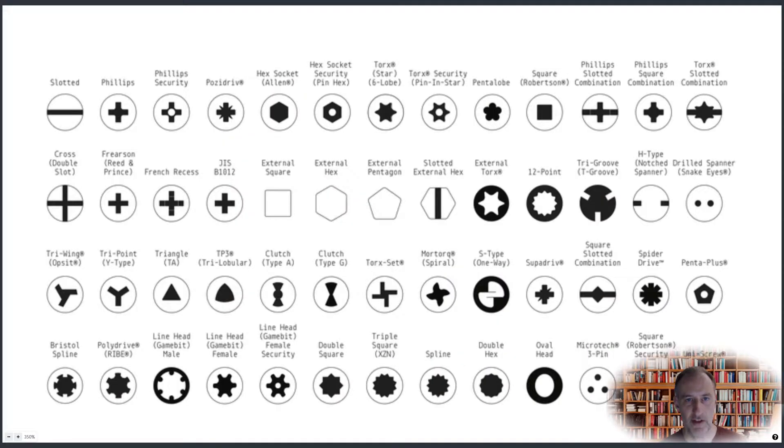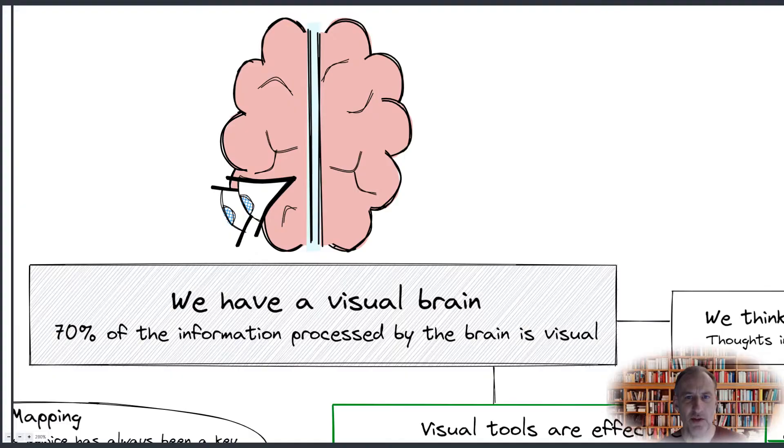It turns out that even something as simple as a screw requires a whole toolbox of tools. Most brain researchers believe that we receive around 70% of information from our environment through our eyes. Our brains are dominantly visual.